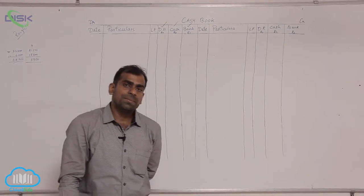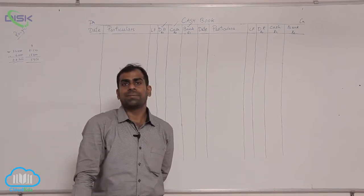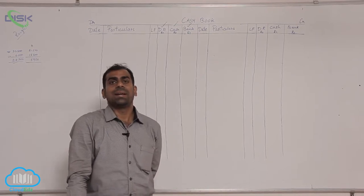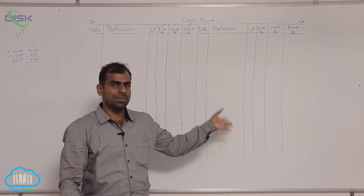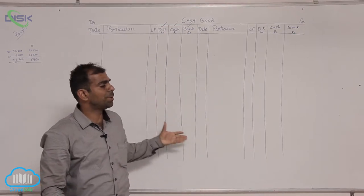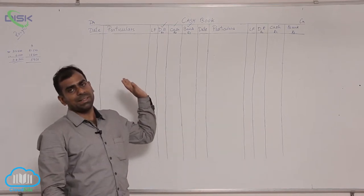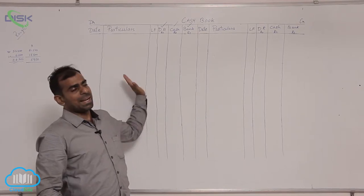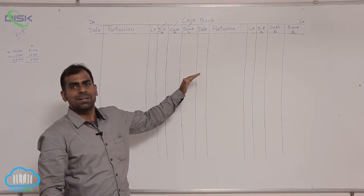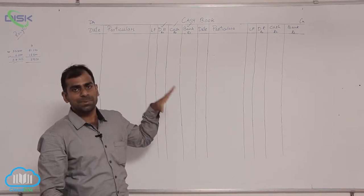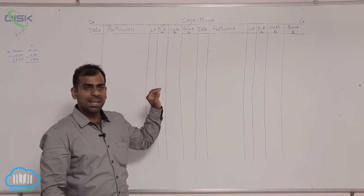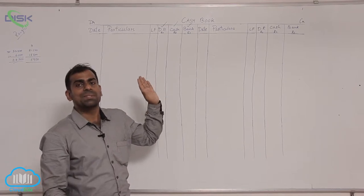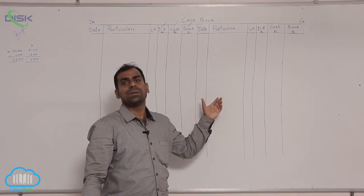We discussed the eighth problem, which was triple column cash book, and from all the problems now onwards in the triple column cash book, I am not going to discuss all the problems or put the whole problem on the board. I will only put the important transactions and how to treat them. Be careful — it is not the full solution for each problem, only the difficult transactions, because the rest being simple you will be able to do on your own.